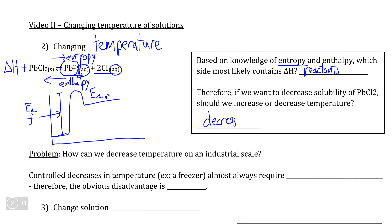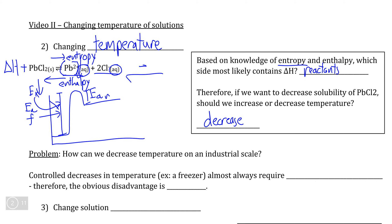If we were to decrease temperature, even though a temperature decrease is going to decrease both reaction rates, we would expect that it would decrease the forward rate — the endothermic reaction — to a greater degree than it would affect the reverse rate. Endothermic reactions are disproportionately affected by temperature decreases because you're decreasing the amount of kinetic energy available, making it even harder to achieve the higher activation energy.